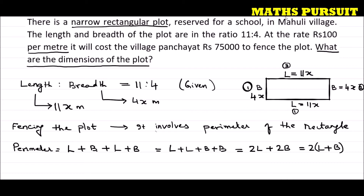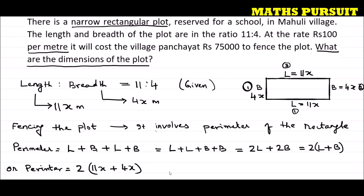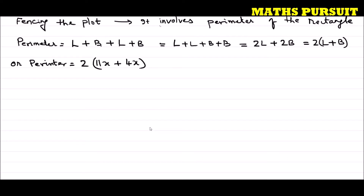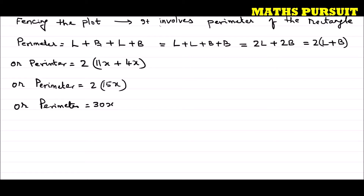Now let us replace the values of length and breadth. Perimeter = 2 × (11x + 4x) = 2 × 15x = 30x. So the perimeter is 30x meters.